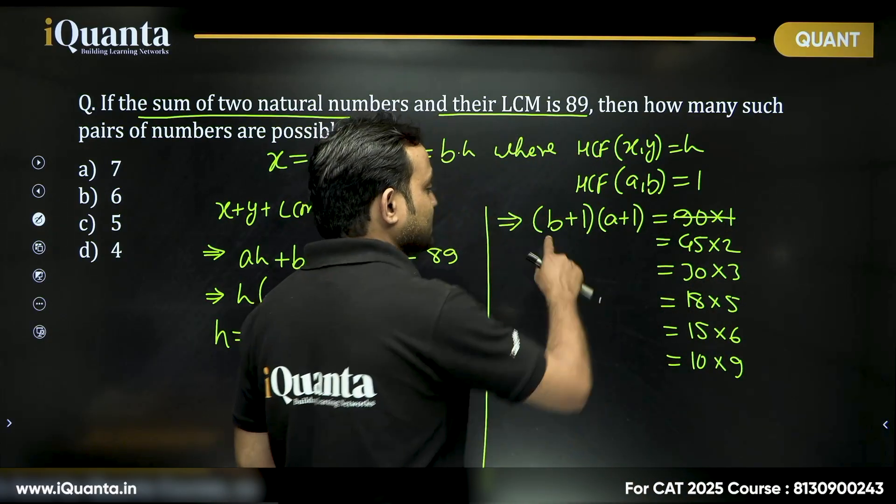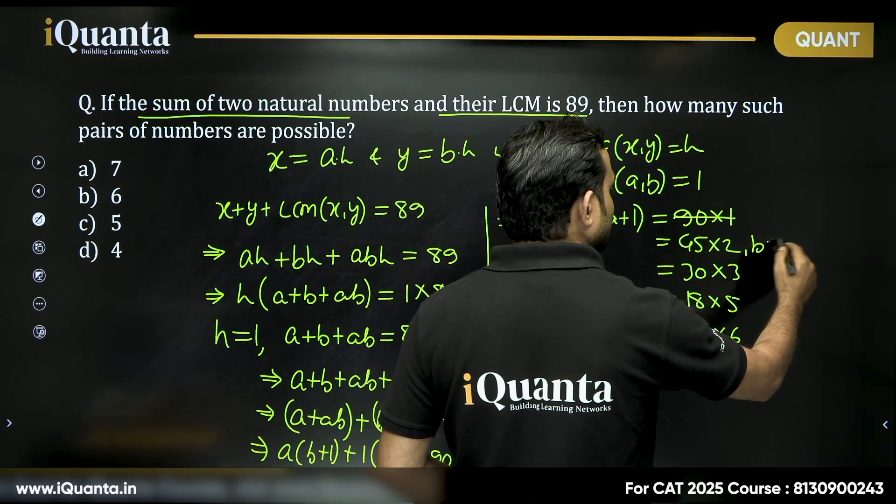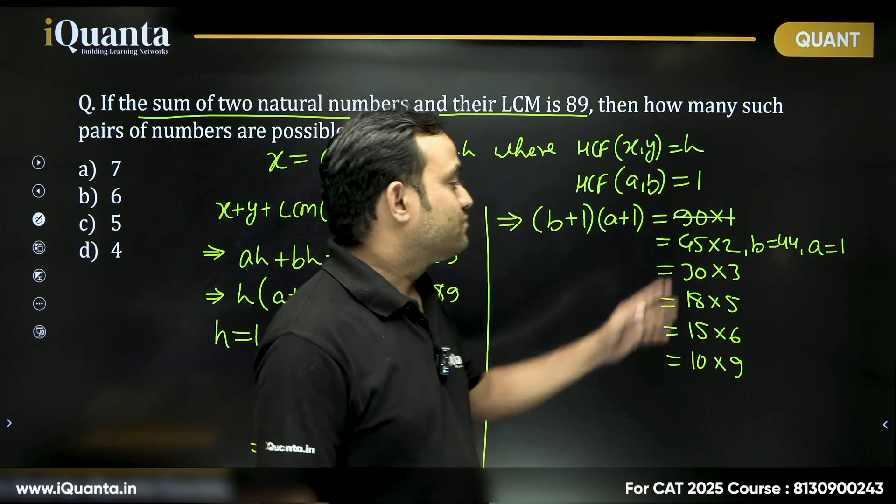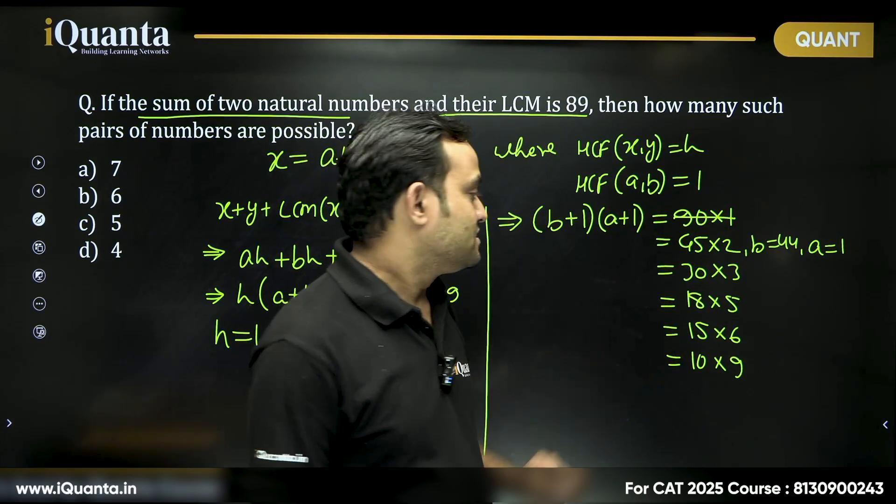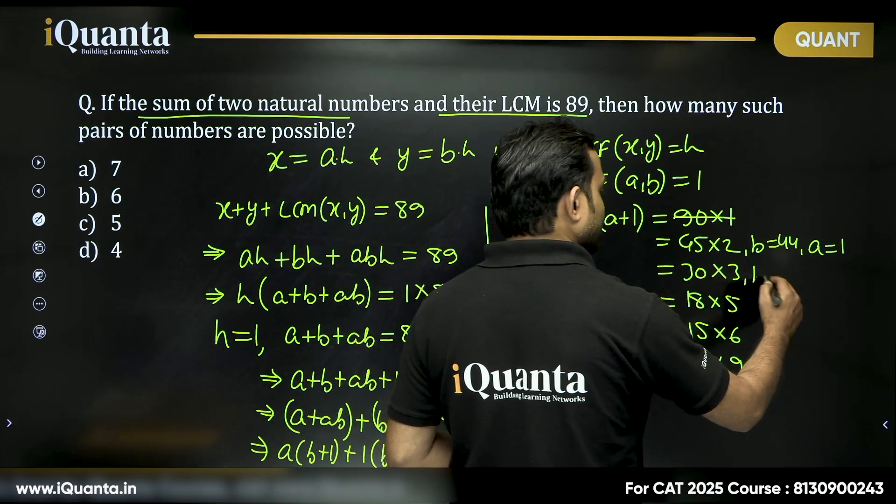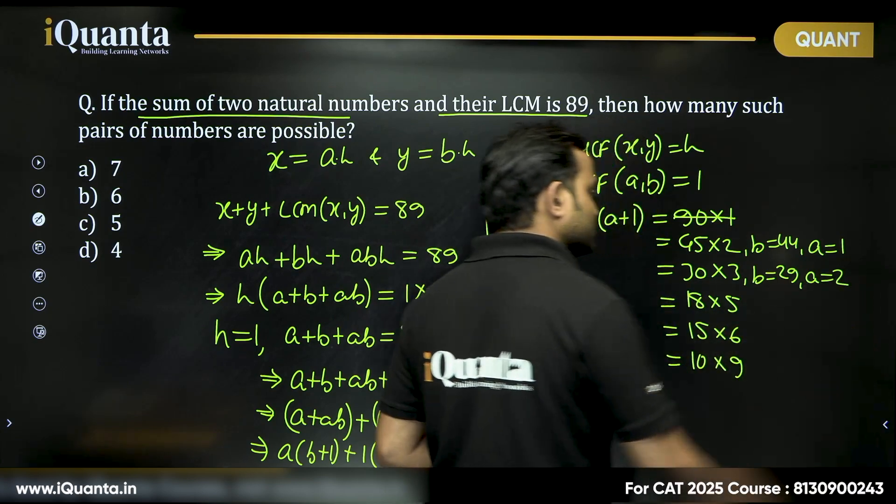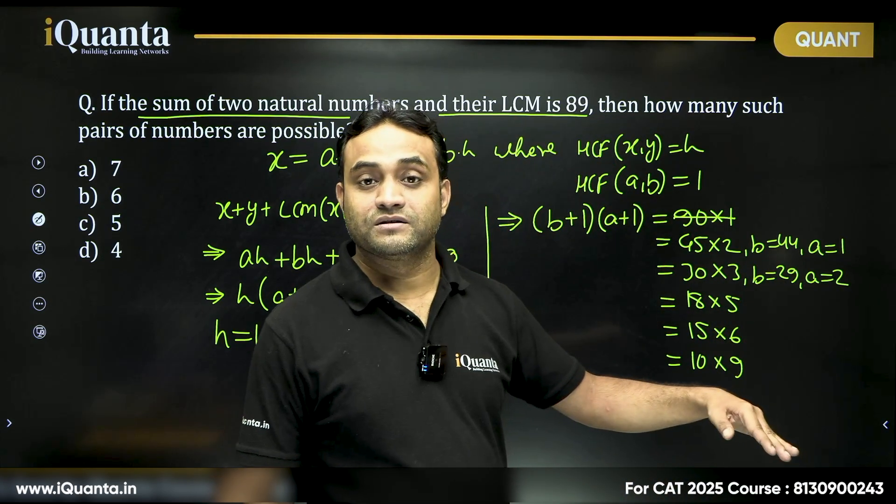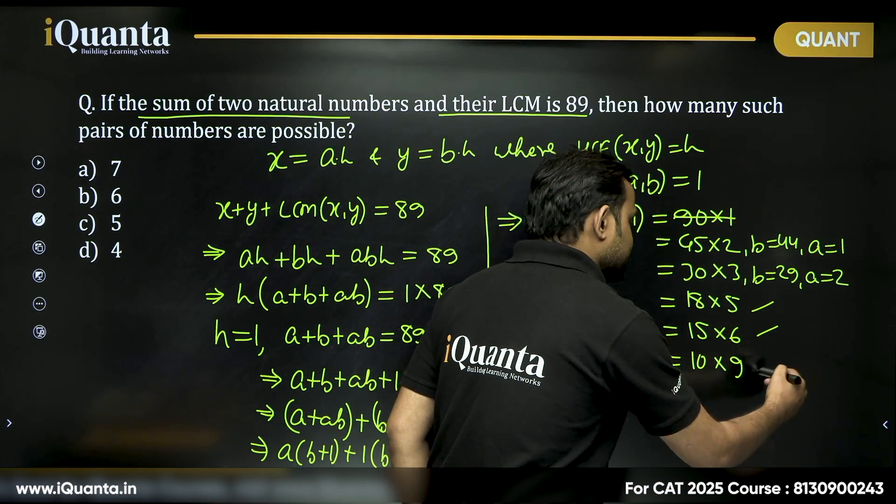If we consider this case, we can say B will equal 44 and A will equal 1. In that case, 44 plus 1 plus 44 will be 89. Then in the second case, B will equal 29, A will equal 2. Then our number will be 29 plus 2 plus 58, which is 58 plus 31, again 89. All of these cases will be valid.